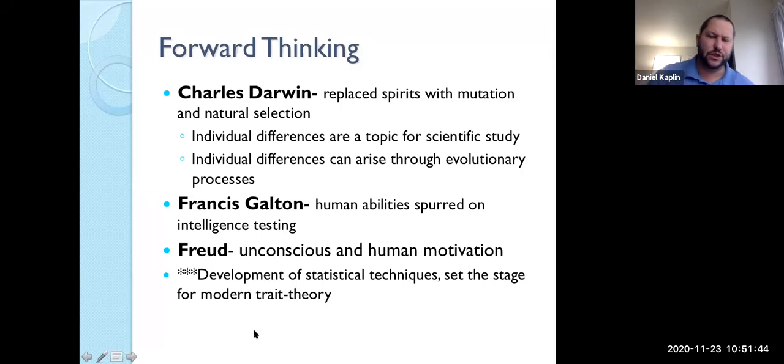It was Alfred Binet who actually creates the first successful intelligence test. But nevertheless, Galton plays a role in trying to understand mental abilities. And then we shift to Freud. Freud was eighteen hundreds to roughly the middle nineteen hundreds. He tries to understand personality through the unconscious and human motivation. And what's great about the eighteen hundreds forward is that a whole bunch of really advanced statistics start to come into play. And that helps us with psychological testing. It helps us with trying to develop what we call a modern trait theory.